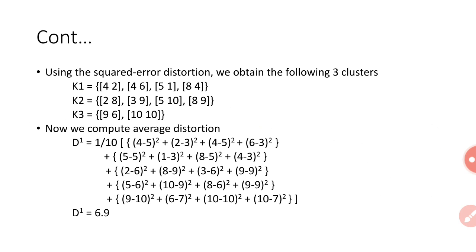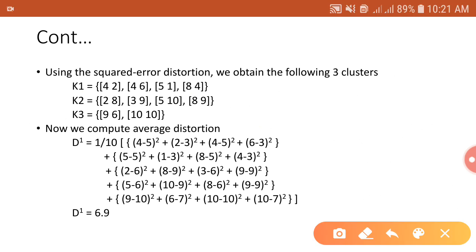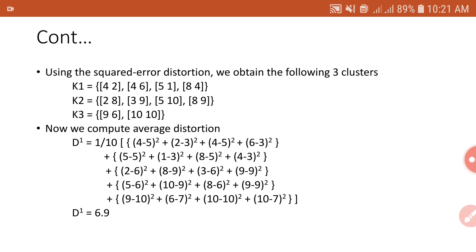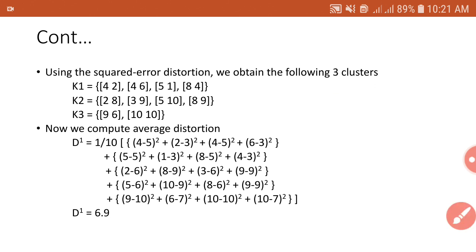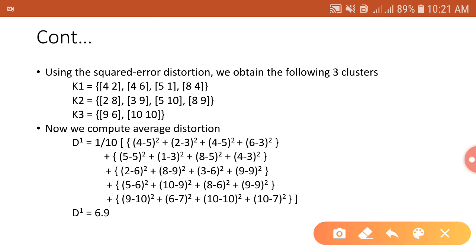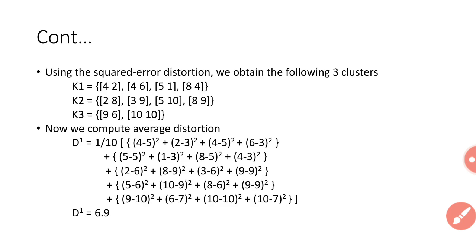Using the squared error distortion criteria, the training set is divided into 3 clusters: K1, K2, and K3. For cluster K1, vectors (4,2), (4,6), (5,1), and (8,4) are closest to the representative code vector R1 = (5,3). For cluster K2, vectors (2,8), (3,9), (5,10), and (8,9) are closest to code vector R2 = (6,9).